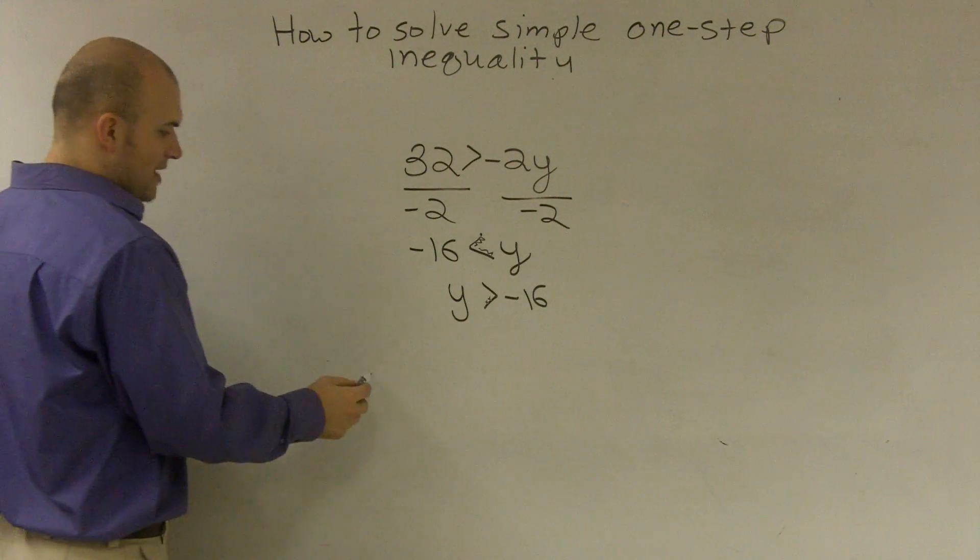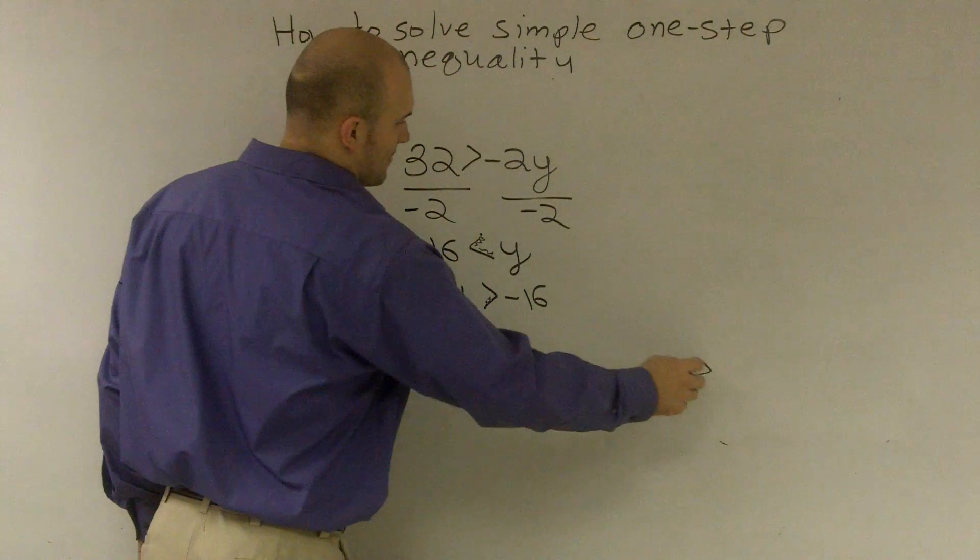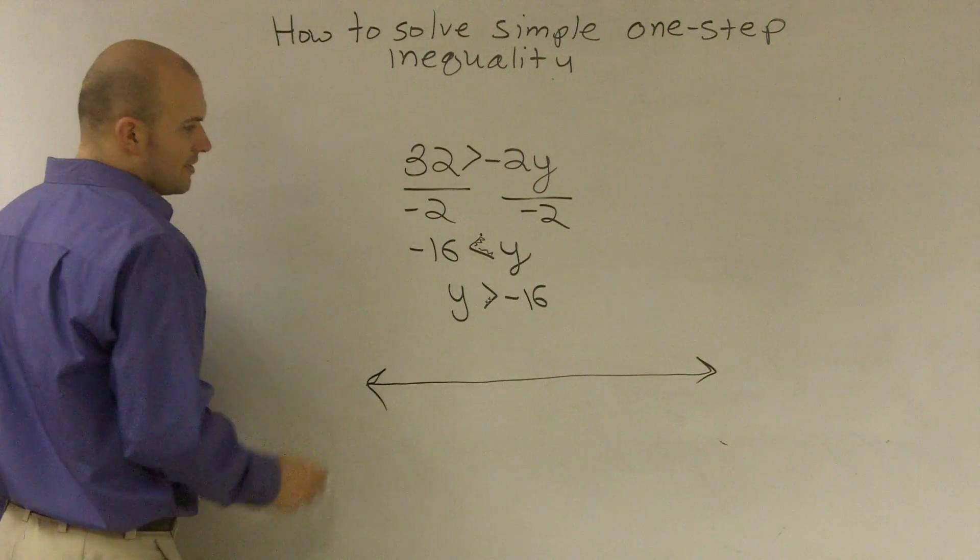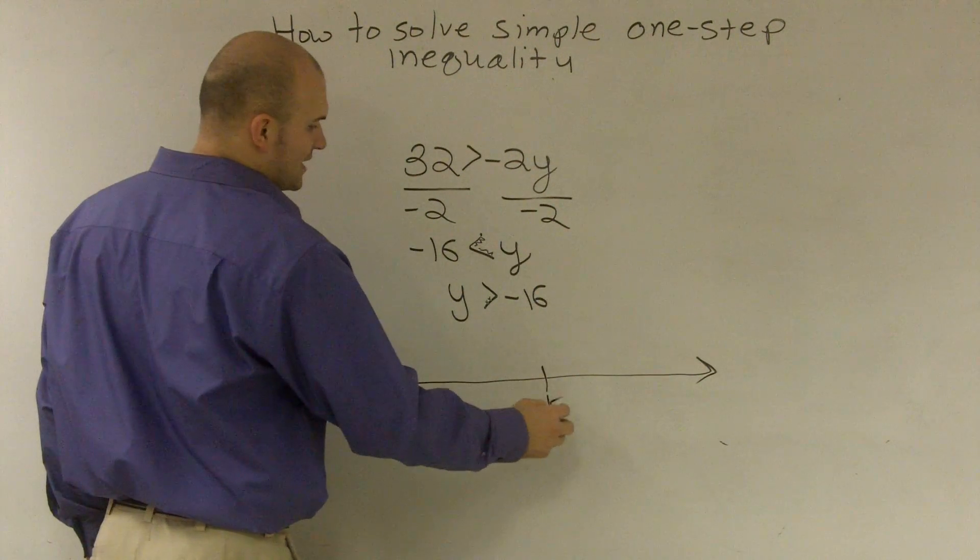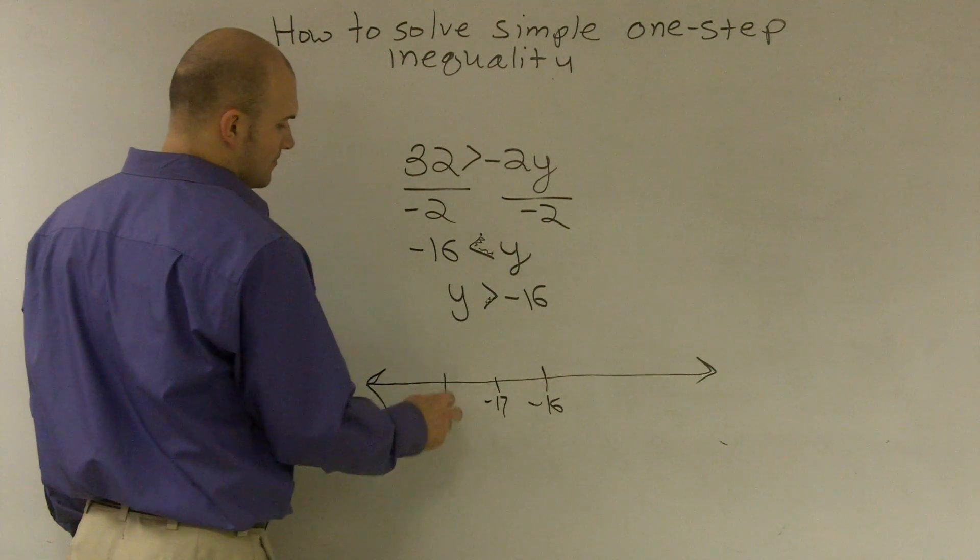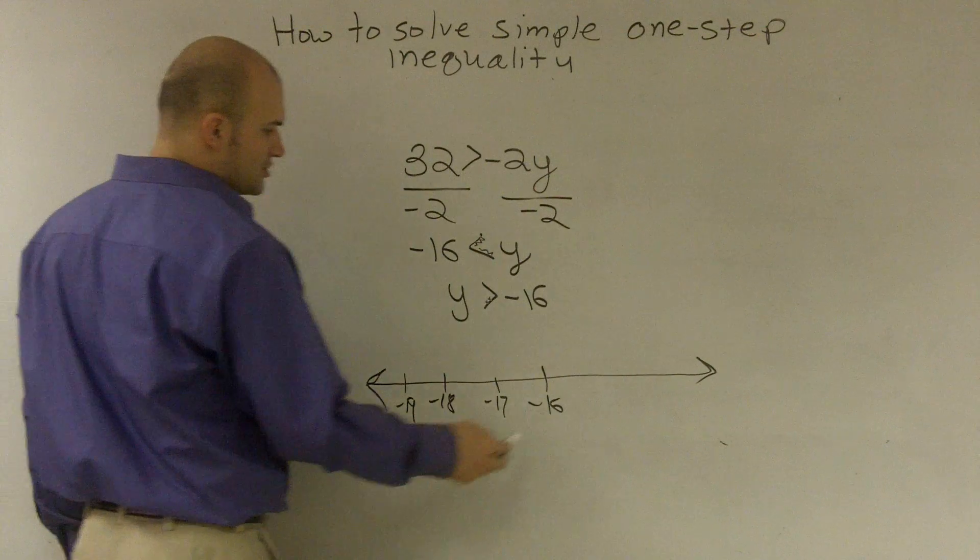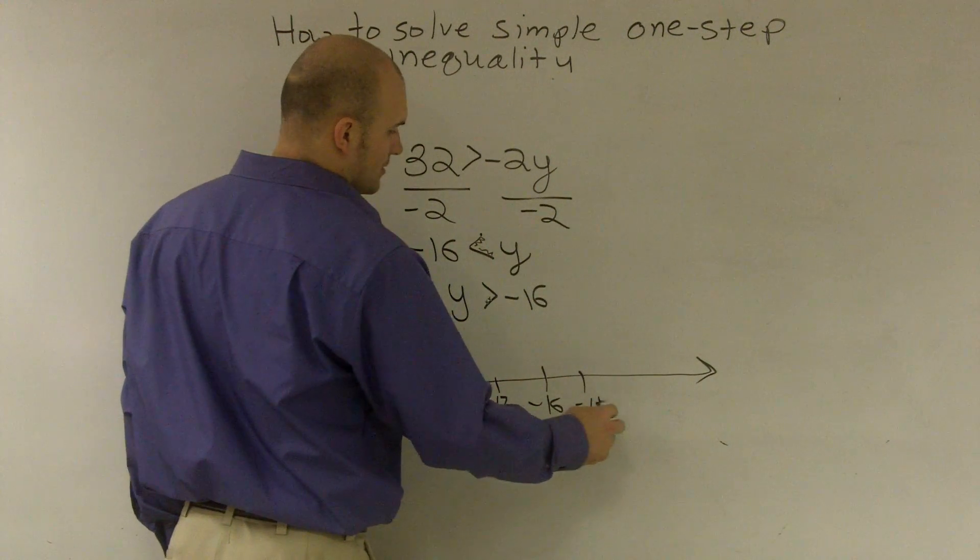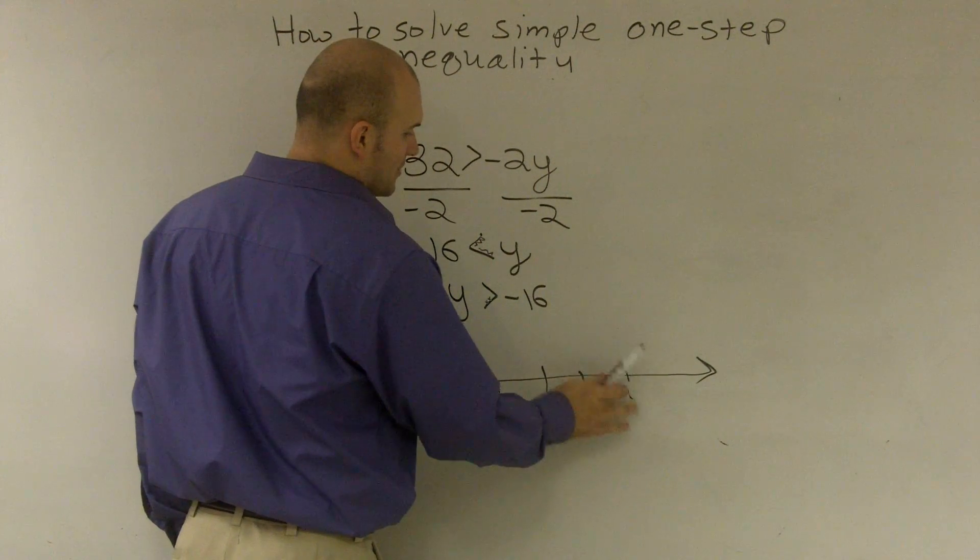So now if I need to graph this problem, I'm going to create a number line. And I'm going to make sure I'm going to have my negative 16 at the forefront. And then I'm going to choose some points that would be represented for the number line.